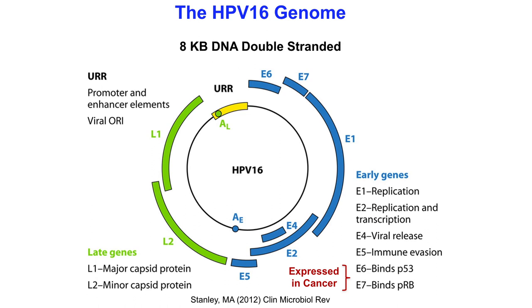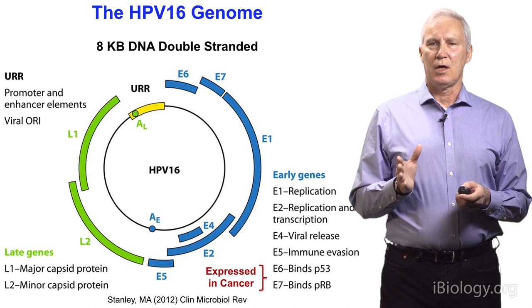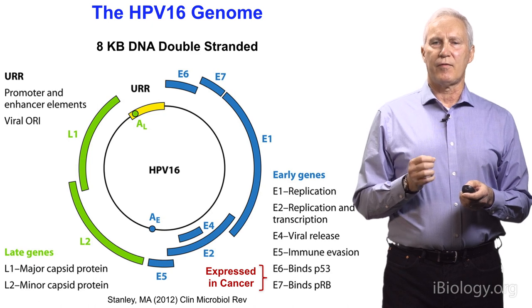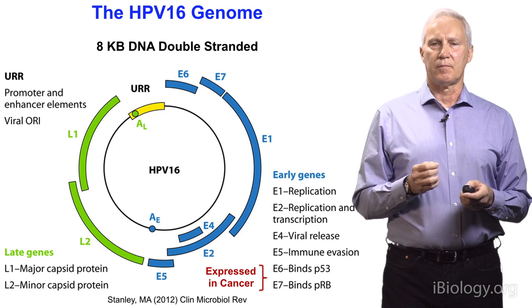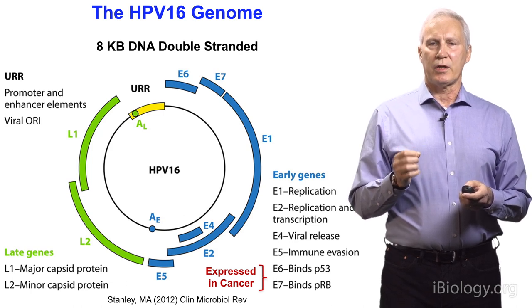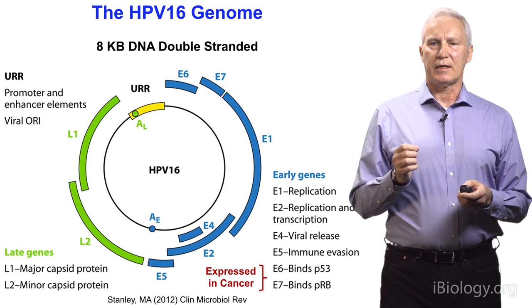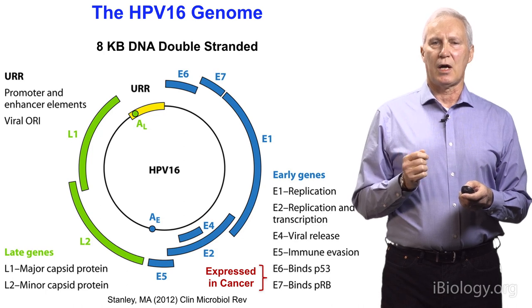First, a little basic molecular biology. HPVs all have 8 kilobase double-stranded genomes, divided into two regions. One is called the early region, which encodes factors involved in the replication and transcription of the viral genome and setting up the cells for viral replication. There are two genes in the early region, E6 and E7, which are selectively retained and expressed in cancers. E6 binds the tumor suppressor gene P53, and E7 binds the tumor suppressor RB.